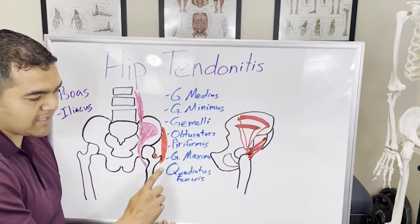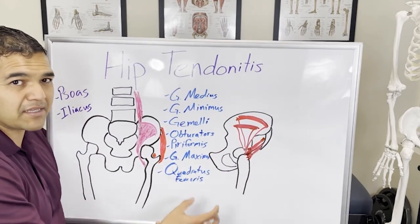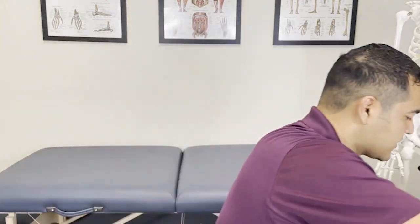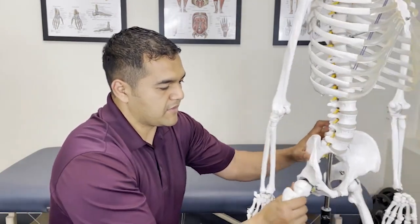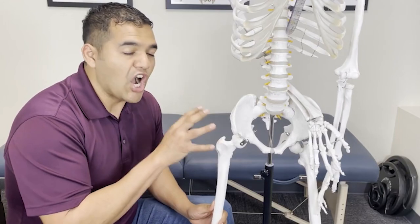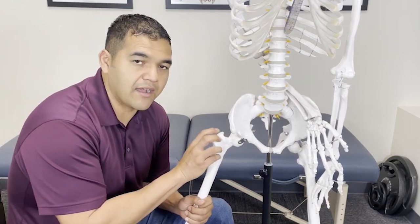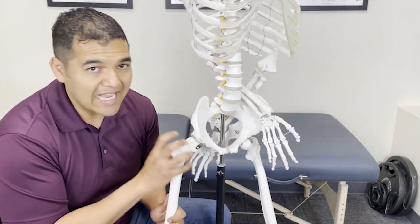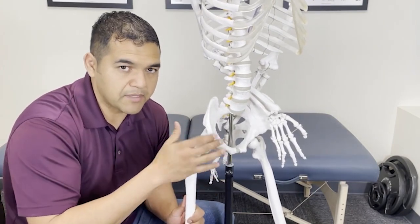The piriformis muscle is another one, and then the quadratus femoris muscle is the lowest of all those deep glute muscles. The important thing to note about all of these muscles — looking at the skeleton here — is that all of those muscles I just mentioned attach to this area of the thigh bone close to the body, and that's exactly where you can get hip tendonitis to happen, on the outside or the front of the hip.